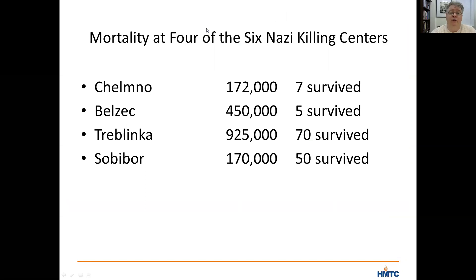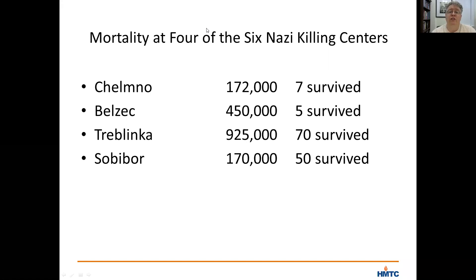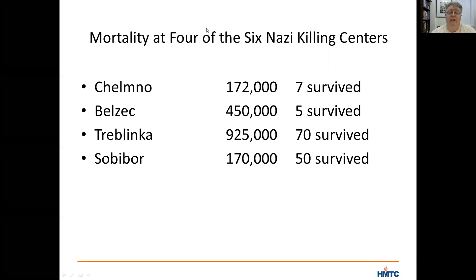The numbers of survivors from those killing centers are shockingly small. Of the 172,000 Jews sent to Chelmno, less than ten survived — ten. Of the 450,000 Jews deported to Belzec, only five survived the war. At Treblinka, 925,000 Jews arrived in deportation trains, and only 70 or so survived. Of the 170,000 Jews sent to Sobibor, only about 50 survived. So a handful out of millions.